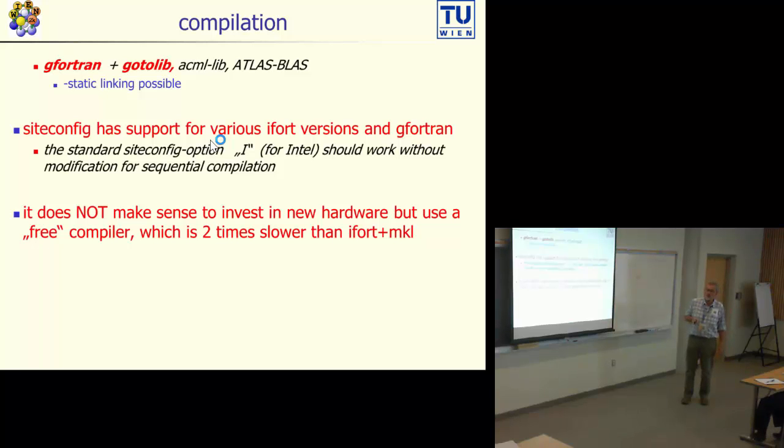You can use gFortran also. This is the free GNU Fortran compiler, but this will limit you in terms of speed. Siteconfig has some default support, and in particular the standard siteconfig option I, I for Intel, should work with modern iFort compilers without any modification. You don't need to change anything in your environment or parameters, at least not for the sequential compilations. As soon as you have properly installed iFort and included it in your environment with the source commands, sequential compilation of Wien2K should be fairly easy.